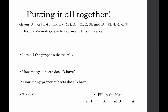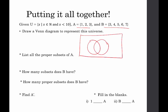We're going to put together everything from the previous few videos. Given that the universe is the set of natural numbers less than 10, set A contains elements 1, 2, and 3, and set B contains elements 3, 4, 5, 6, 7. First we'll draw a Venn diagram. A is not a subset of B, nor is B a subset of A, but they do have an overlap, so we overlap them. The universe also has 8 and 9, which we place outside both sets.